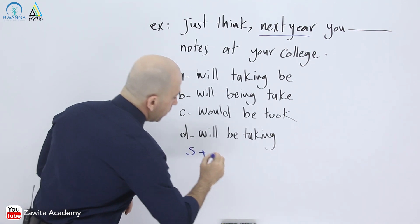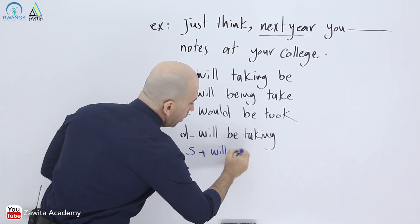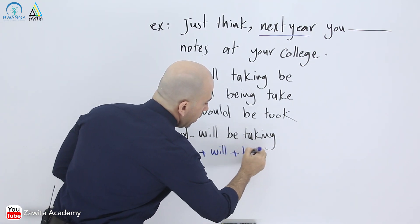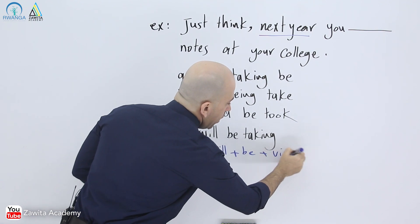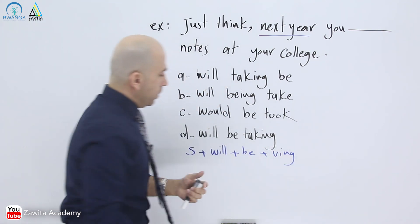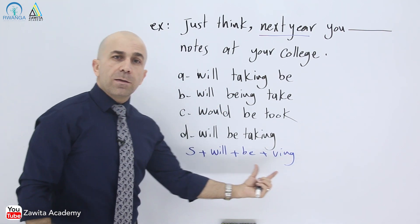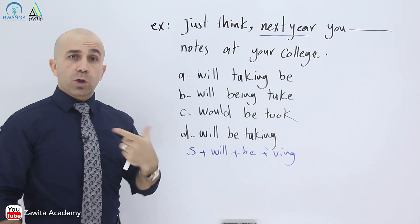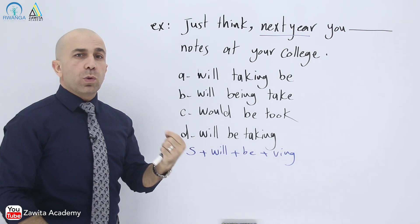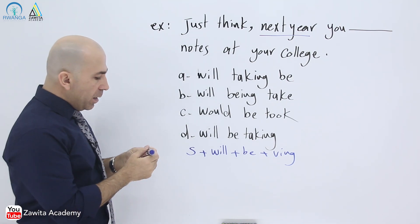So the subject is 'you,' then 'will,' then 'be,' then the verb with -ing. This confirms the structure: subject plus will plus be plus V-ing.